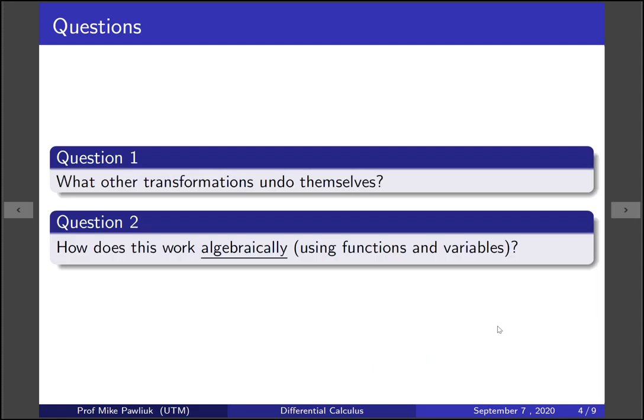So what sort of questions does this raise? One question is: what other transformations undo themselves? Is it just reflections across a vertical line, or are there other things? Another question we might ask is: how does this work algebraically? Or to put it bluntly, if you use functions and variables and x's and f's, how would you describe it mathematically?